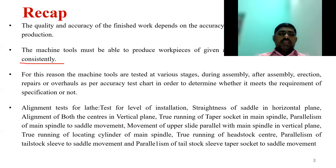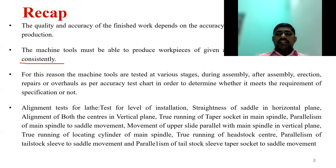In the last class we covered alignment tests for the lathe: test for level of installation, straightness of the saddle in horizontal plane, alignment of both centers in vertical plane, true running of taper socket in main spindle, parallelism of main spindle to saddle movement, movement of upper slide parallel with the main spindle in vertical plane, true running of locating cylinder of main spindle, true running of headstock center, and parallelism of tailstock sleeve to saddle movement.